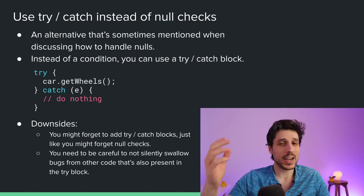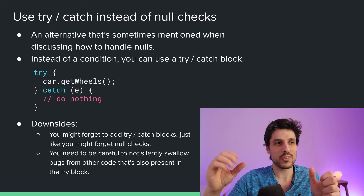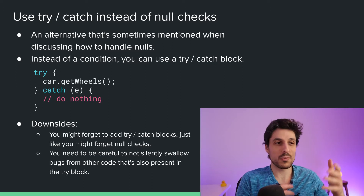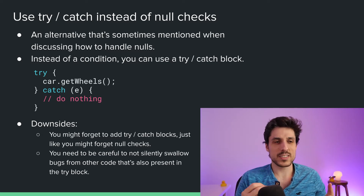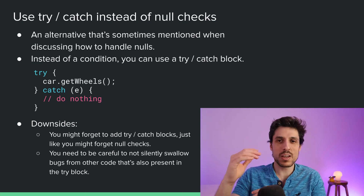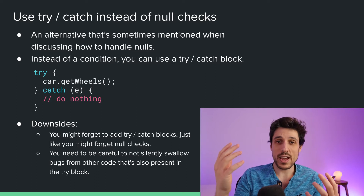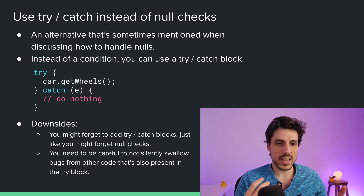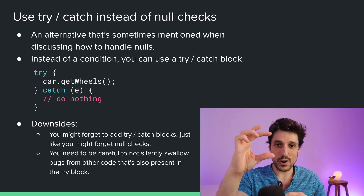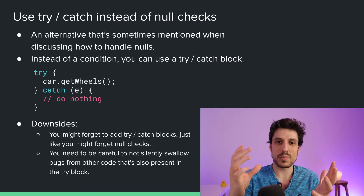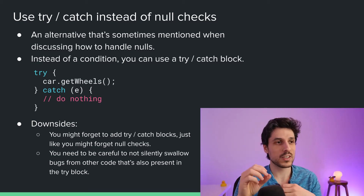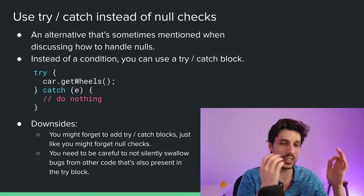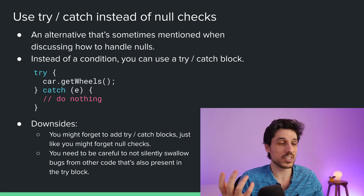The next one is to use a try-catch block instead of null checks. A try-catch is essentially the same as a null check — you still have some sort of condition, and you may still forget to put the try-catch, just like you might forget to add the null check. And specifically with try-catch, if you're not tight with your try blocks and you put a lot of code in there, you might catch silent bugs that have nothing to do with the null check. At the end of the day, it's more like an alternative to a null check — it's still a null check that you need to remember to place, so I don't see it as too different.